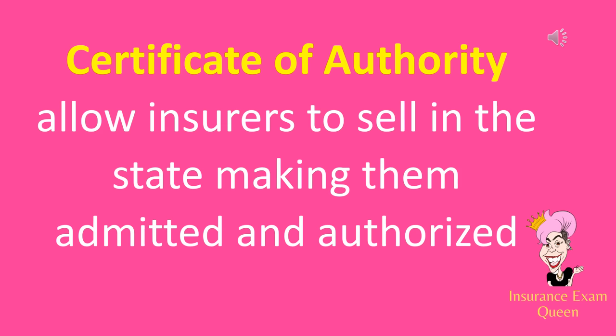Certificate of authority allows insurers to sell in the state, making them admitted and authorized. If an insurance company wants to sell in a state, they must go to that state's department of insurance and ask permission. If approved, they receive a certificate of authority, meaning they are admitted and authorized to transact sales within the state.